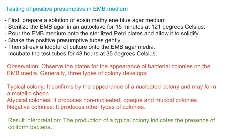Observation of bacterial colonies: typical colonies show a metallic sheen with nucleated appearance. Atypical colonies are non-nucleated. Negative colonies are bare-type colonies with no metallic sheen. If typical colonies are present, it confirms positive results.